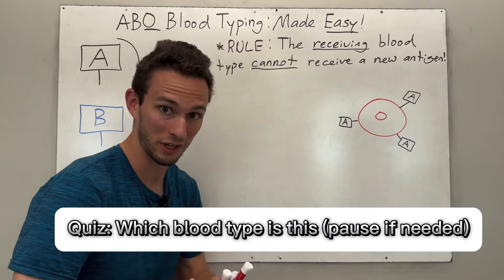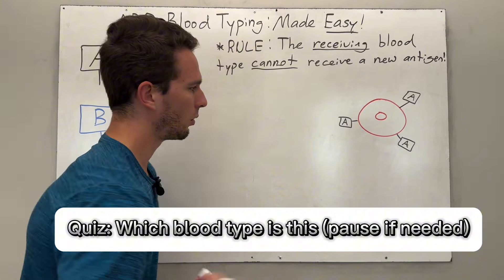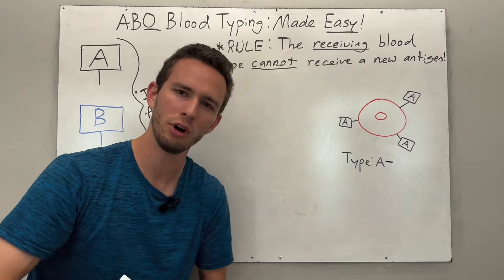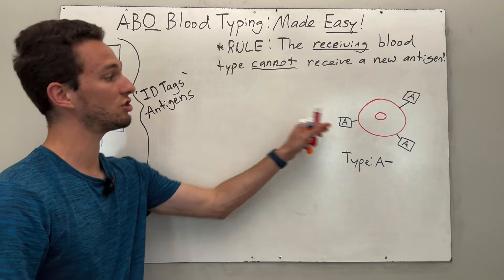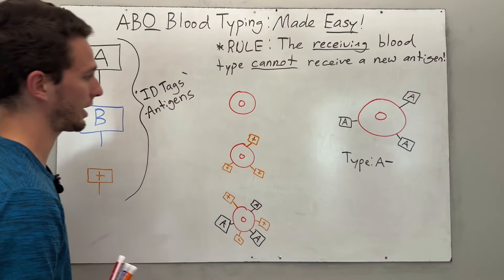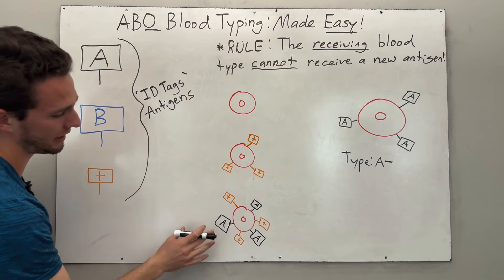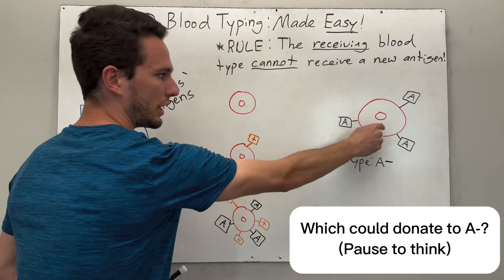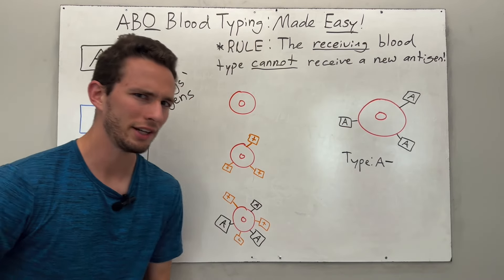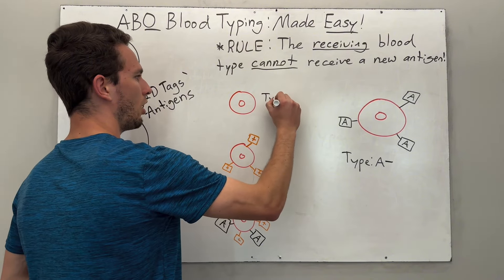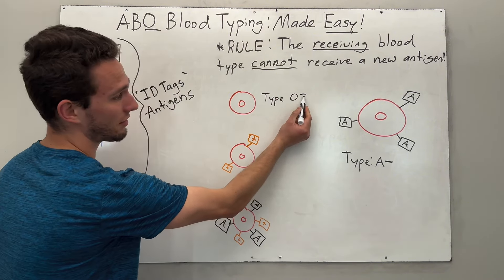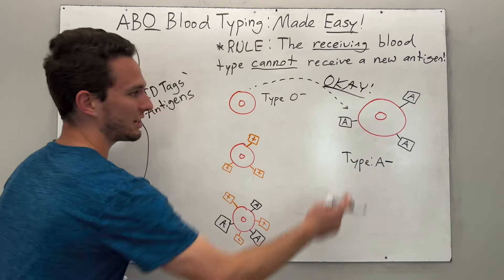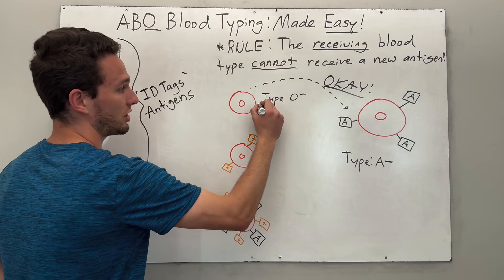Let's say we have a person whose red blood cells only have the A antigen — so they are type A negative. Now I'm going to show three different blood types, and you tell me which one can donate to type A negative. The first has no antigens at all — type O negative — and since he has no antigens, donating to A negative is okay because no new antigens are being introduced. That's why type O negative is the universal donor.